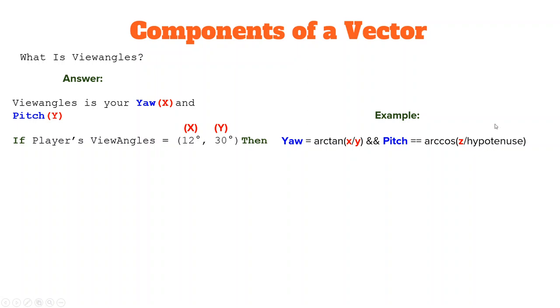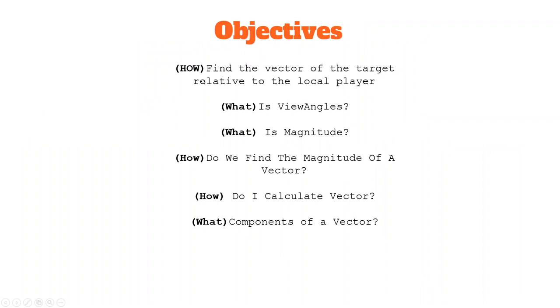To conclude what we went over, we discussed how to find the vector of the target relative to the local player, what is view angles, what is magnitude, how do we find the magnitude of a vector, how do we calculate vector, and what are the components of a vector. That concludes this video. This is Student Developer, and I'm out.